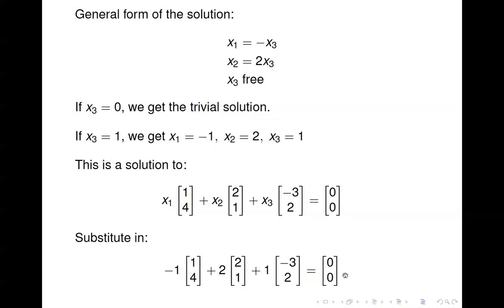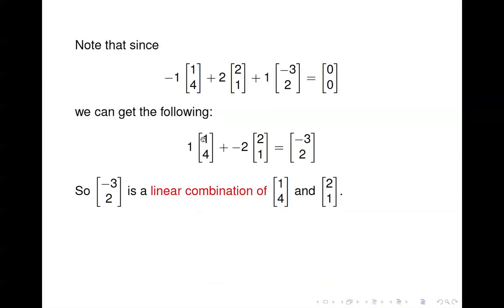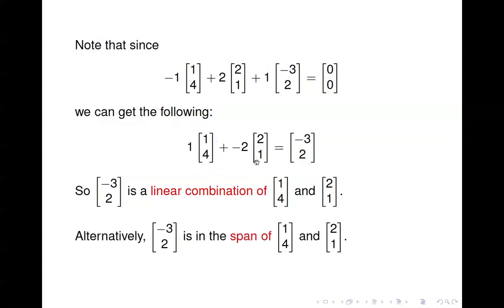Taking the values for x3 equals 1 and plugging them in: negative 1 times the first vector plus 2 times the second vector plus 1 times the third gives the zero vector. Notice from this we can solve for the vector (−3, 2), showing that (−3, 2) can be written as a linear combination of (1,4) and (2,1). Another way of saying that is that (−3, 2) is in the span of those other two vectors.